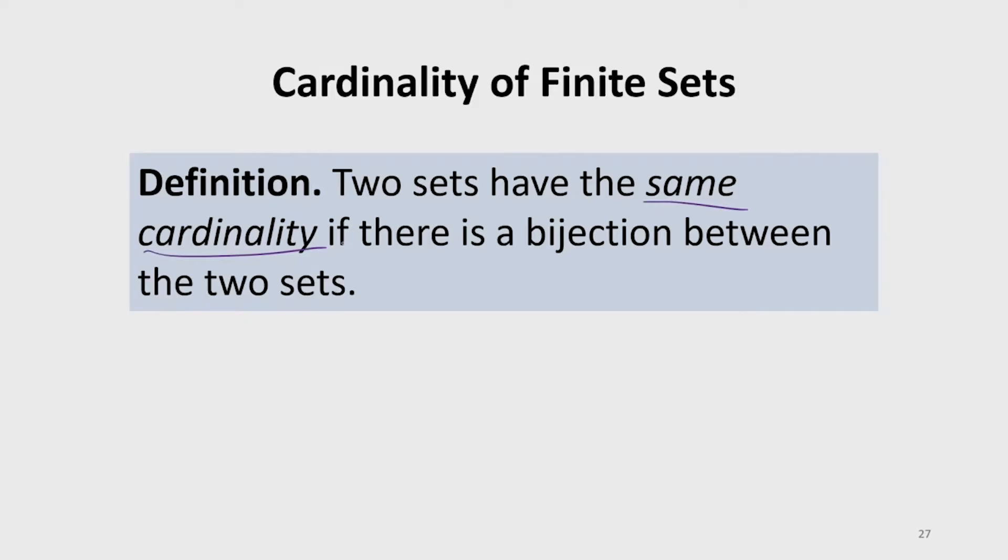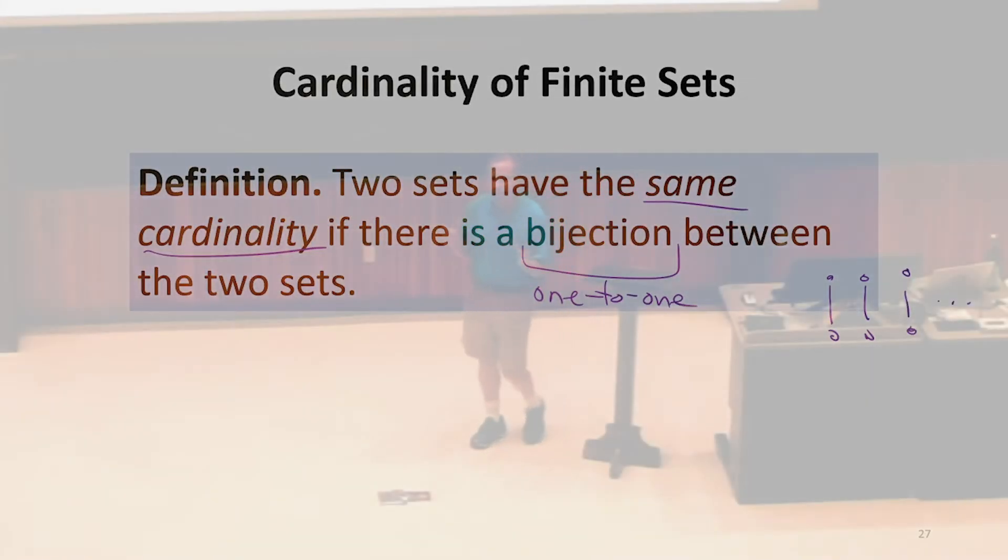The definition we're going to use, and this is a widely accepted definition, is that if we can find a bijection, this is a one-to-one mapping between the two sets. That means every element in the sets maps to exactly one element in the other set. One-to-one mapping means they have the same cardinality. That seems like a pretty good match to our intuition about what cardinality of sets should mean.